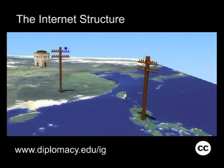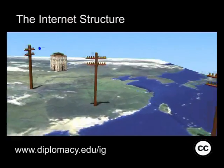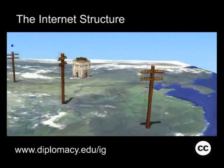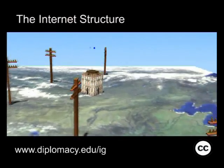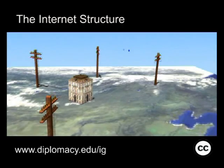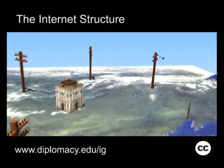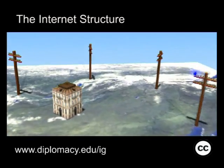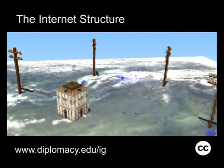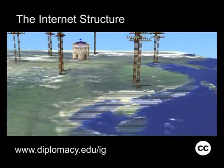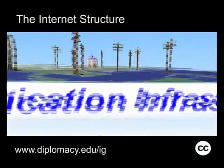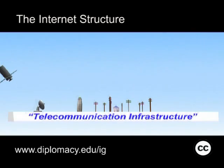Telecommunication infrastructure includes the physical network necessary to run the Internet, such as underwater cables, telephone lines, fiber optics, satellites, microwaves, Wi-Fi, etc.